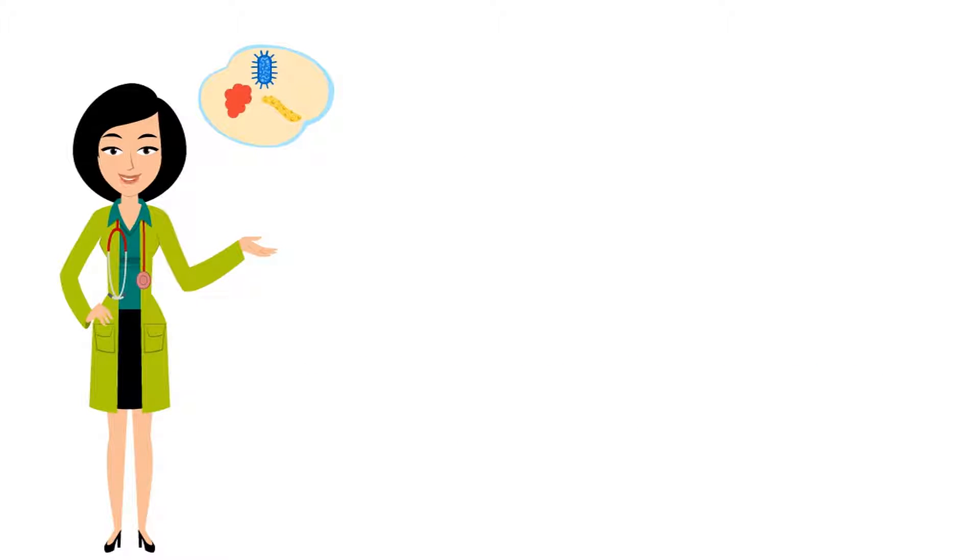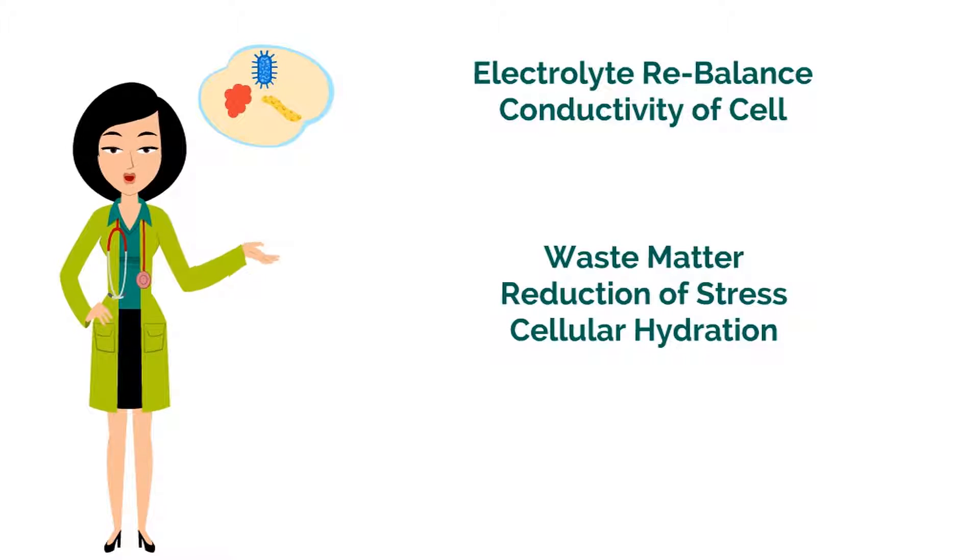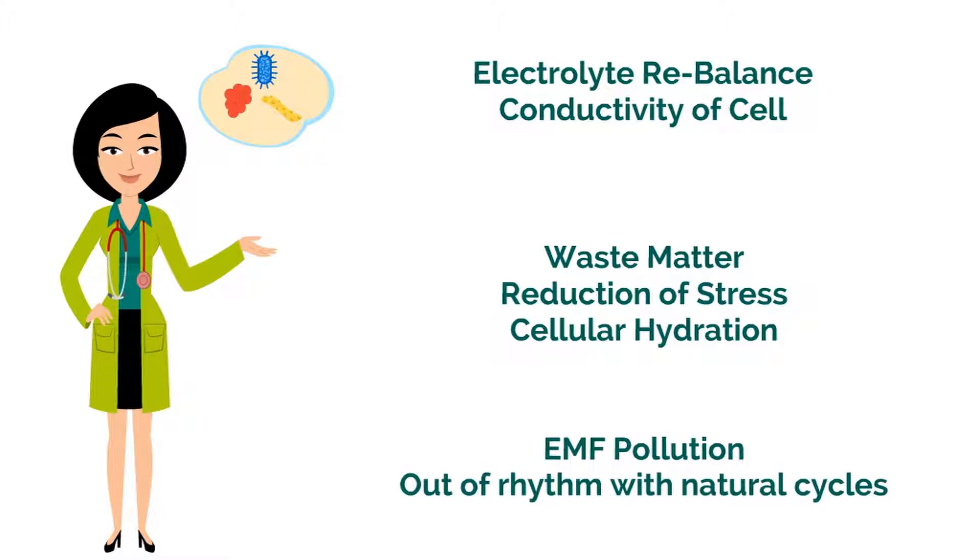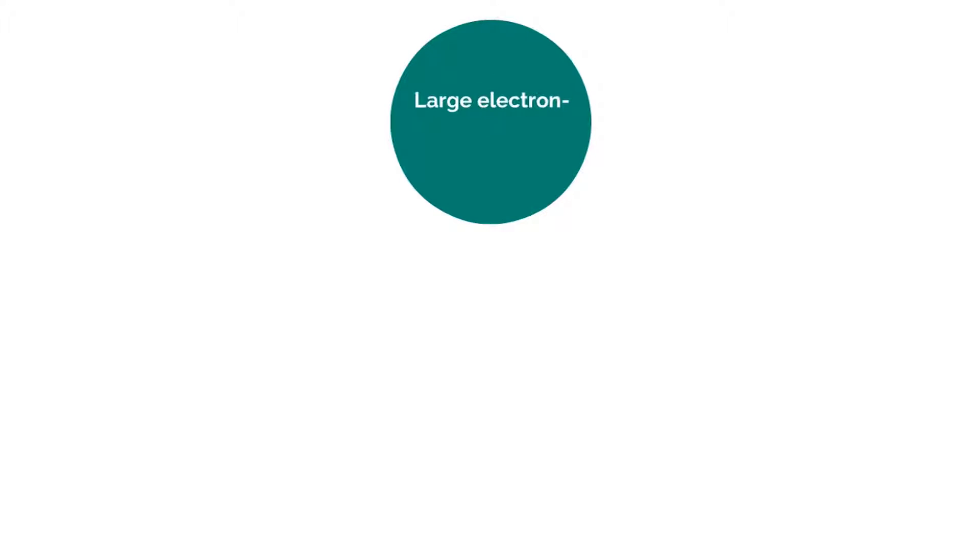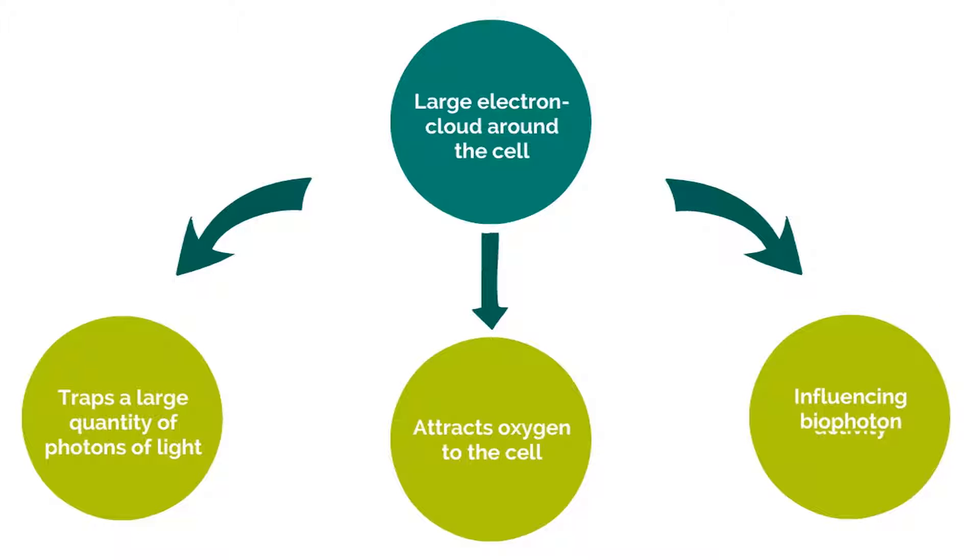At this point, we believe the practitioner should be evaluating the appropriate electrolyte rebalance and conductivity of the cell, the ability to eliminate waste matter effectively, reduction of stress that in turn impacts our cellular hydration and energy production, for example, EMF pollution, being out of rhythm with natural cycles like eating and sleep patterns. Addressing these factors maximises the creation of a large electron cloud around the cells, which then traps a large quantity of photons of light, which naturally attracts oxygen to the cell, influencing bio-photon activity.